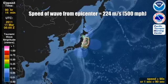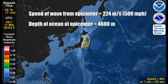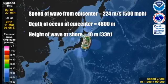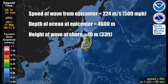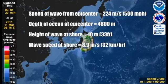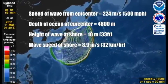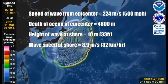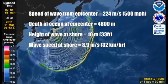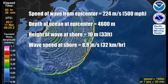Depth of the ocean at the epicenter is estimated at 4,600 meters. The height of the wave at the shore was 10 meters or 33 feet, which is roughly the height of a three-story building. At this point, the wave was traveling at 8.9 meters per second. For reference, the fastest human sprint speed ever was 12.43 meters per second.